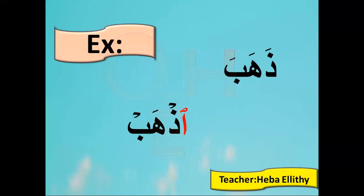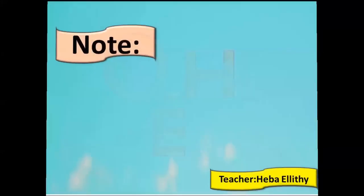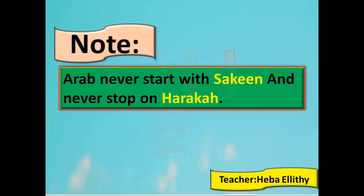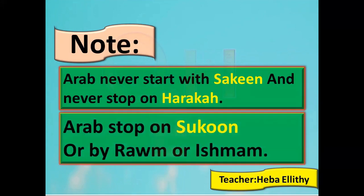Does Hamzat al-Wasl only come in verbs? No — it can come in nouns, verbs, or even letters. We will see this, inshallah, by explaining this chapter. Note number one: Arabs never start with Sukun — remember this, it is very important. Arabs never start with Sukun and never stop on Haraka. Arabs stop on Sukun, or by Raum or Ishmam. They can stop with Raum or Ishmam too, but never stop with Haraka at all.